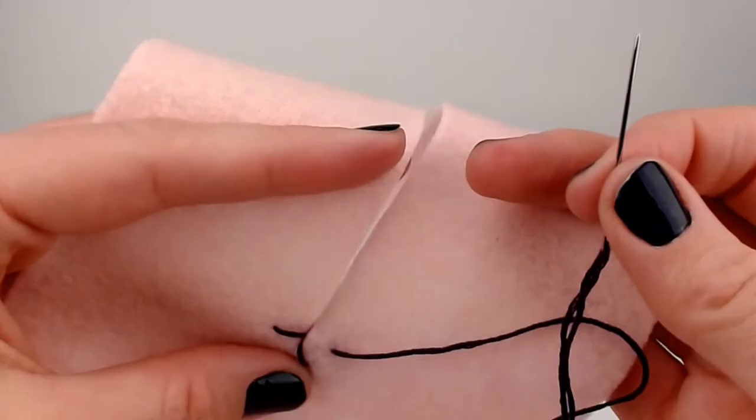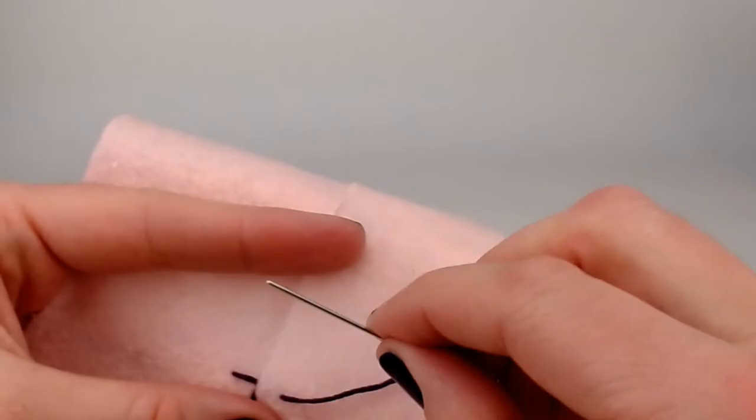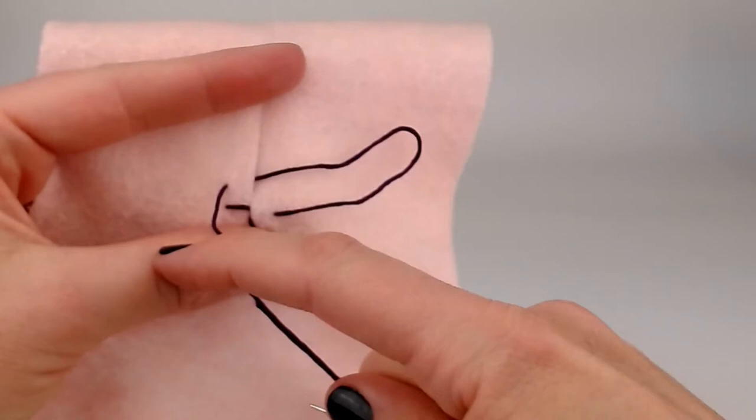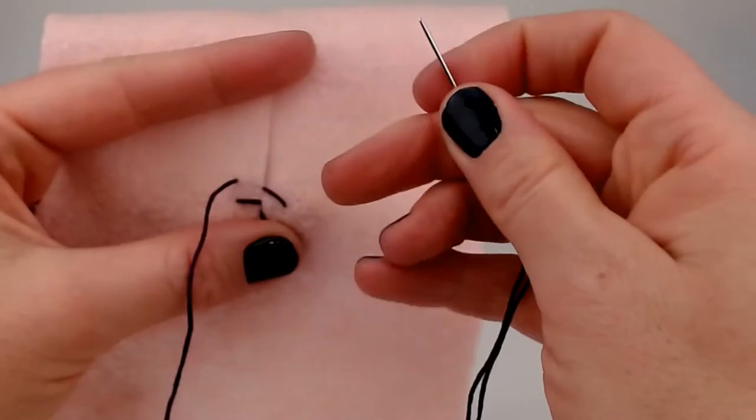We're going to close it, keep it nice and straight and flat. And then I'm going to just take my needle, I'm going to go in, and I'm going to try to come out about the same distance this way and this way from the previous stitch. And there we go.